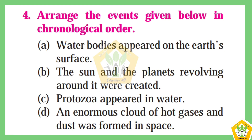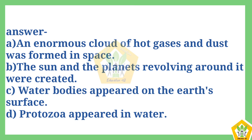Question number 4. Arrange the events given below in chronological order. The answer is: A. An enormous cloud of hot gases and dust was formed in space. B. The sun and the planets revolving around it were created. C. Water bodies appeared on the Earth's surface. D. Protozoa appeared in water.